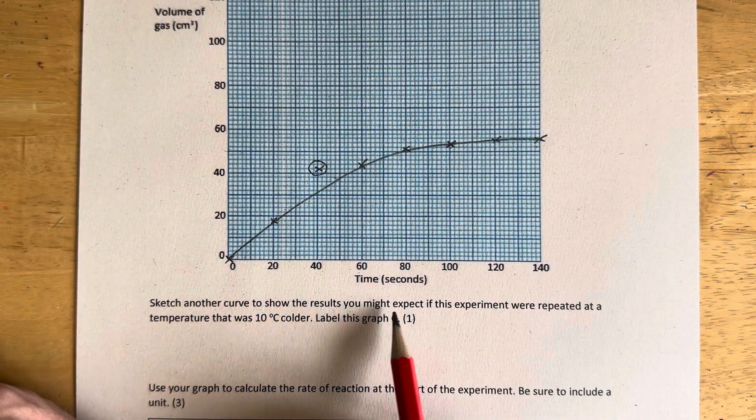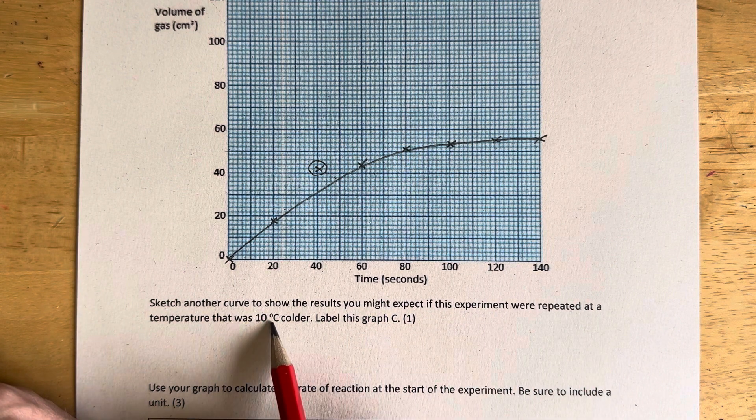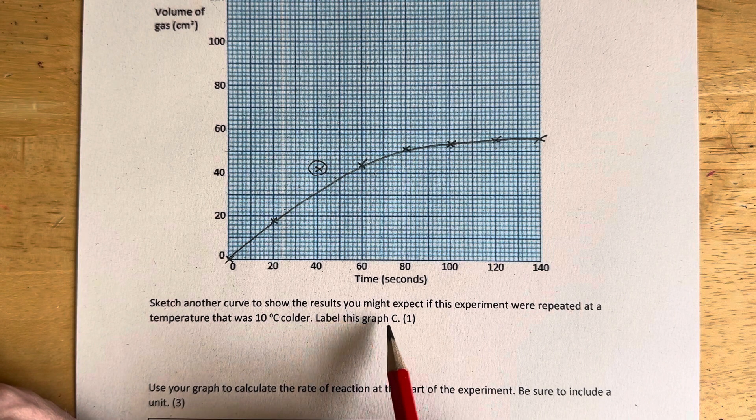Sketch another curve to show the results you might expect if this experiment were repeated at a temperature that was 10 degrees C colder. Label this graph C.